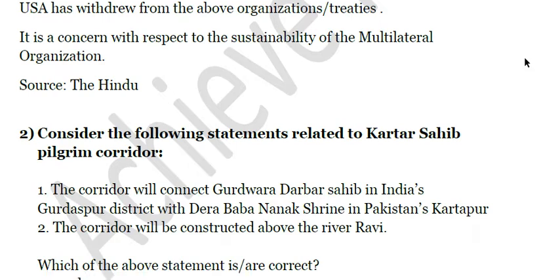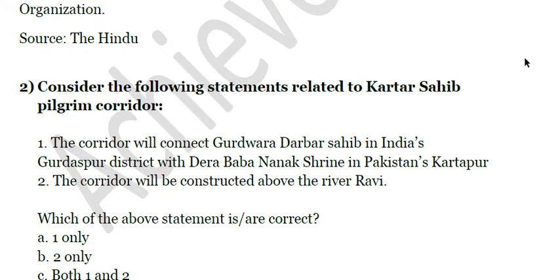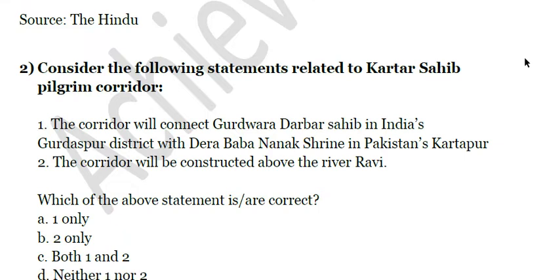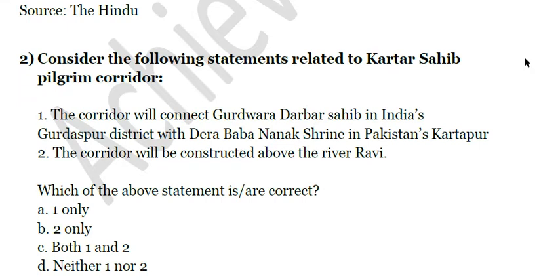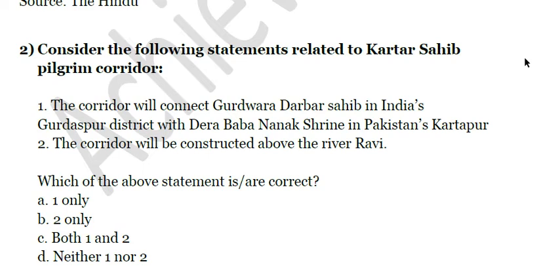The second question: consider the following statements related to the Kartarpur Sahib pilgrim corridor. First, the corridor will connect Gurdwara Darbar Sahib in India's Gurdaspur district with Dera Baba Nanak shrine in Pakistan's Kartarpur. Second, the corridor will be constructed above the river Ravi. The first statement is incorrect because Gurdwara Darbar Sahib is not in Gurdaspur district — rather it is in Amritsar district.